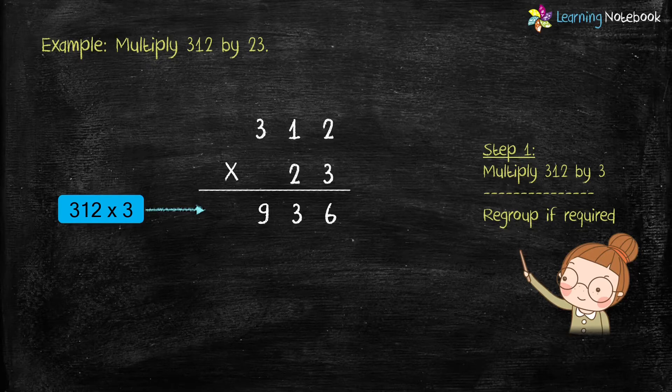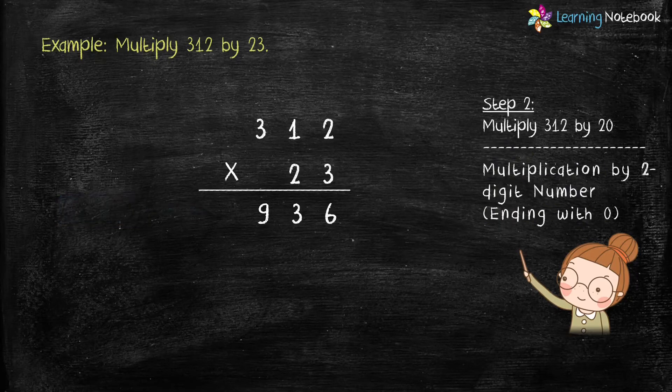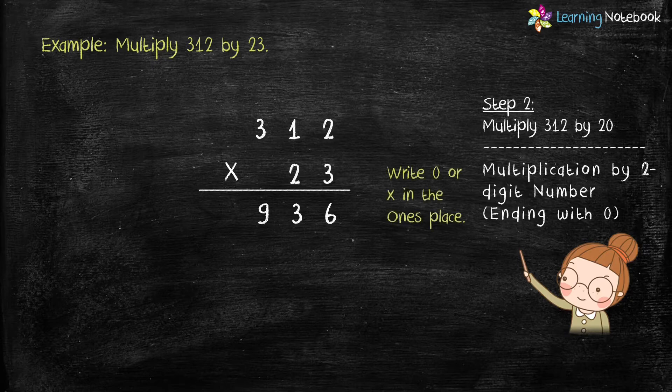Now let's do step 2 where we will multiply 312 by 2 tens, or 20. For this, write 0 in the 1's place. Now let's multiply 312 by 2.